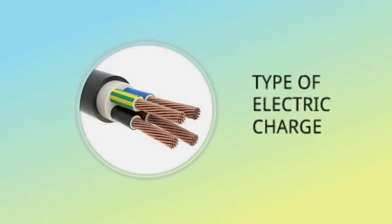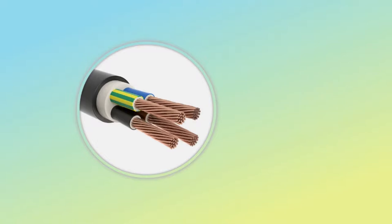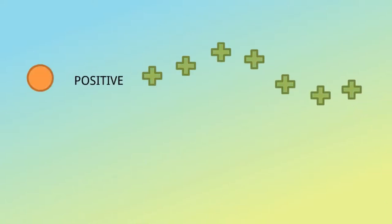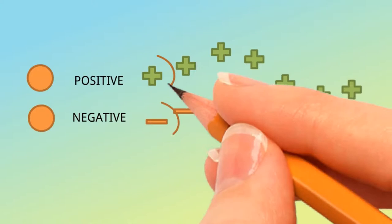Types of electric charge: there are two types of electric charge. This is the positive electric charge and this is the negative electric charge. This positive and negative electric charge has the same nature as a magnet.